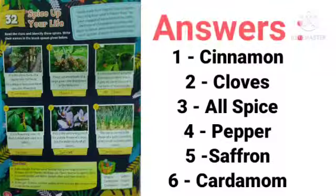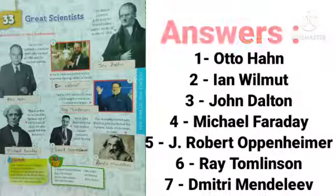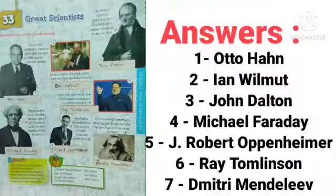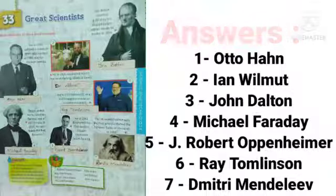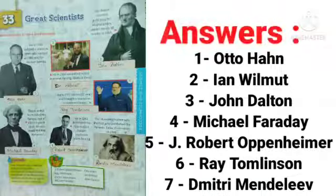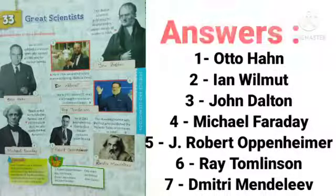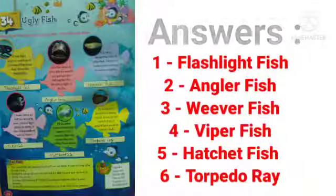The sixth spice is cardamom. Now move to Chapter 33: Great Scientists. Write the names of these great scientists. First is Otto Hahn, second is Ian Wilmut, third is John Dalton, fourth is Michael Faraday, fifth is J. Robert Oppenheimer, sixth is Ray Tomlinson, and seventh is Dmitri Mendeleev.